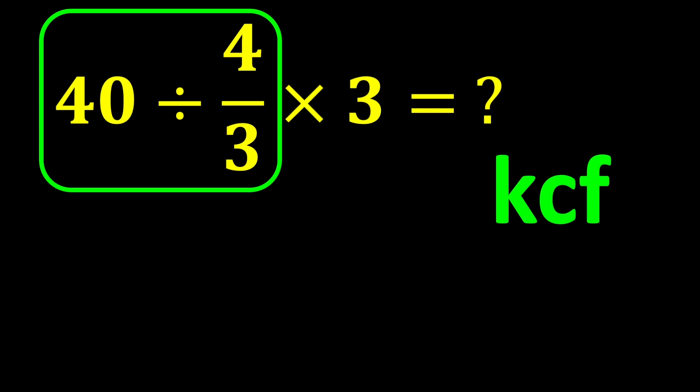K stands for keep, C stands for change, and F stands for flip. Here's how it works: keep the first number as it is, change the division sign to multiplication, flip the second number, take its reciprocal.